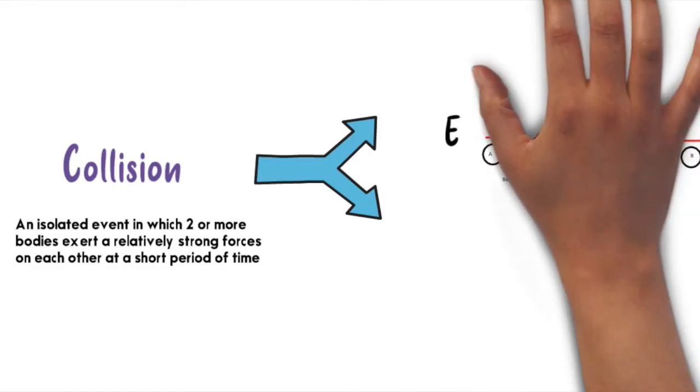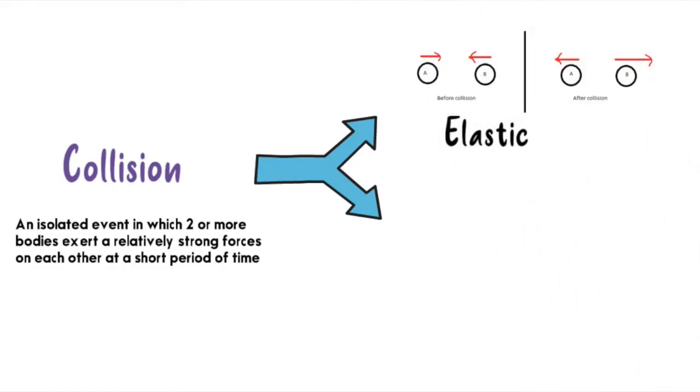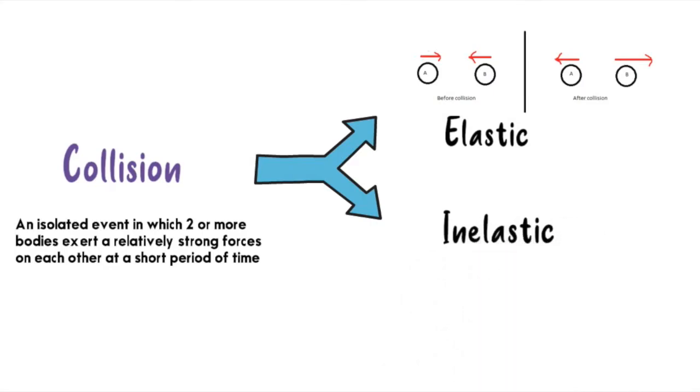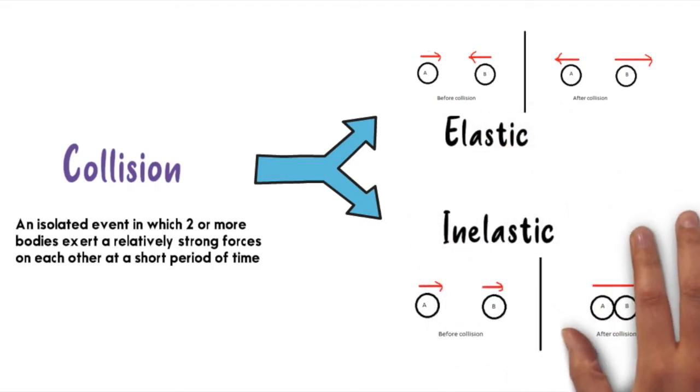In elastic collision, the two balls do not stick together and move in opposite directions. In inelastic collision, from the figure you can see the balls are sticking together once the collision occurs. Objects experiencing inelastic collision will not always be sticking together—sometimes they can be moving in separate directions.